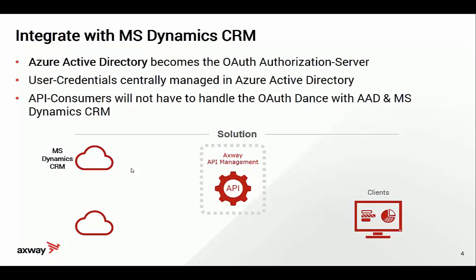Looking at the architecture in a bit more detail, you can see the CRM, which is offering an OAuth-protected API. For OAuth we need an access token, and that access token is issued by the Azure Active Directory, because it is the identity provider — it stores the identities — and on the other hand it is the OAuth authorization server. The access token must be a personalized access token because access to the CRM system is personalized, and that's why clients wanting access to the CRM system must somehow log in. To do that, clients access the CRM API exposed on the API management solution.